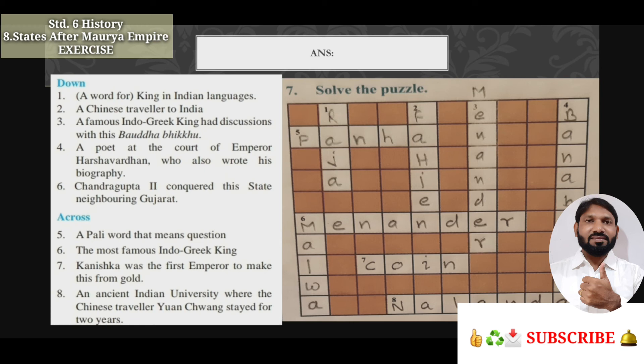Across clues — five: Chandragupta the Second conquered this state neighboring Gujarat — the answer is Malwa. Six: a Pali word that means question — the answer is Pana. We have studied that Milindapanha. Seven: the most famous Indo-Greek king — the answer is again Menander, who was one of the famous kings of the Indo-Greek kingdom. Eight: Kanishka was the first emperor to make this from gold — coin. Nine: an ancient Indian university where the Chinese traveler Xuanzang stayed for two years — the answer is Nalanda.